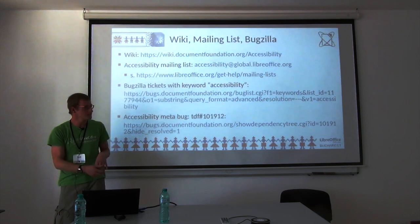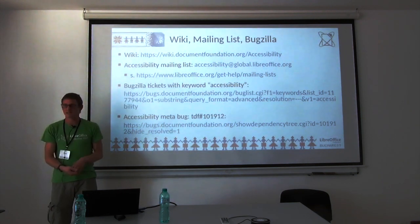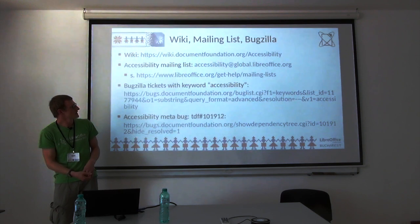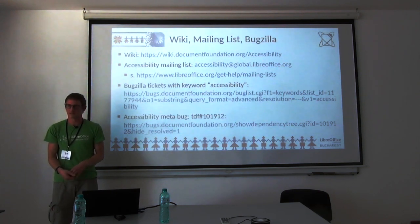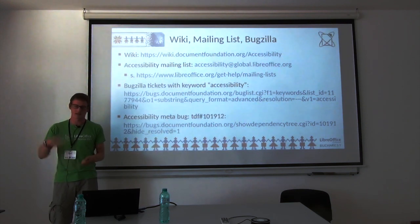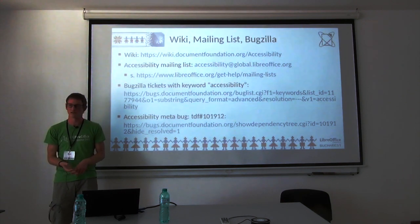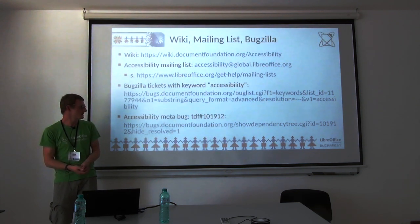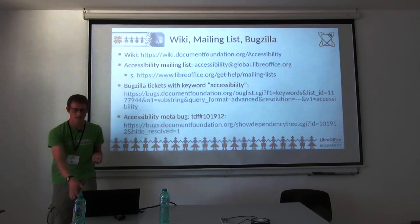That covers the improvements. Here are some ways to get involved: we have an accessibility mailing list with a link on the slides. You can find accessibility-related tickets in Bugzilla using the 'accessibility' keyword. There's also a meta bug with sub-bugs for Windows, Linux, and macOS. There are currently about 200–250 bugs related to accessibility in Bugzilla, giving a rough overview of what's already reported.